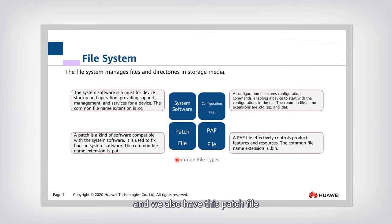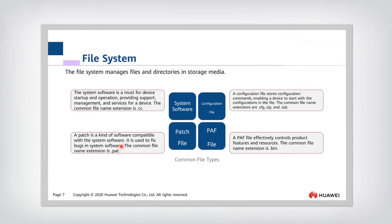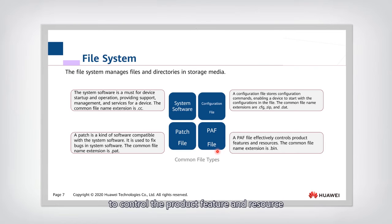We also have the patch file. A patch file is an upgrade or update for the software — it is compatible with the system software and can fix bugs or provide updates. Finally, we also have the PAF file, which you can think of as a control file that controls product features and resources.